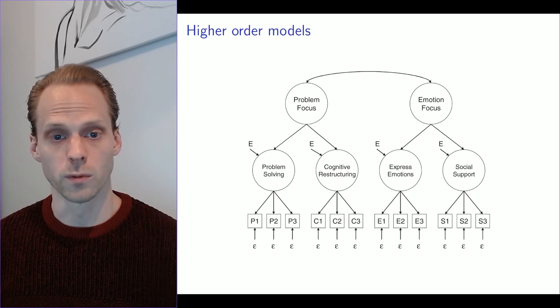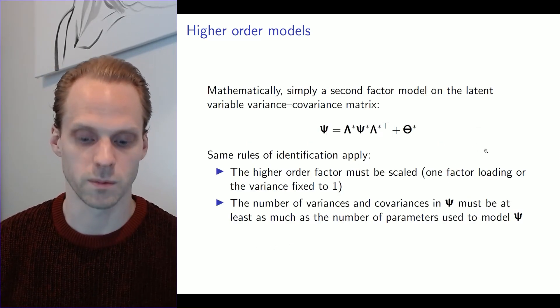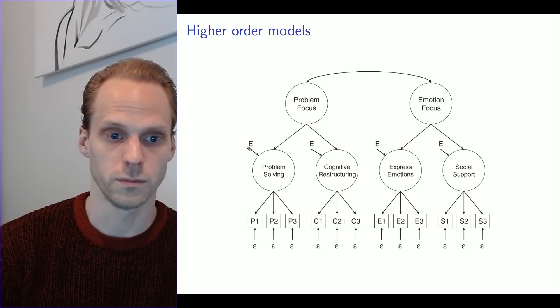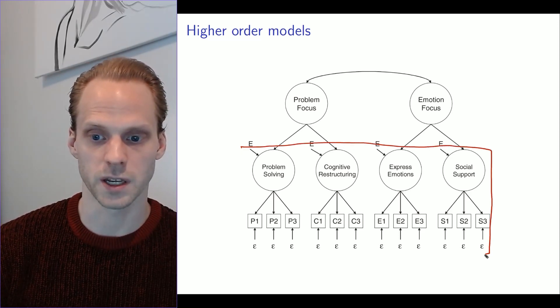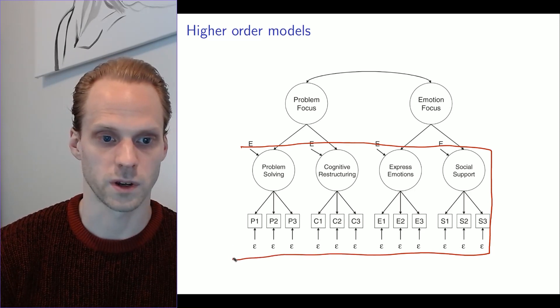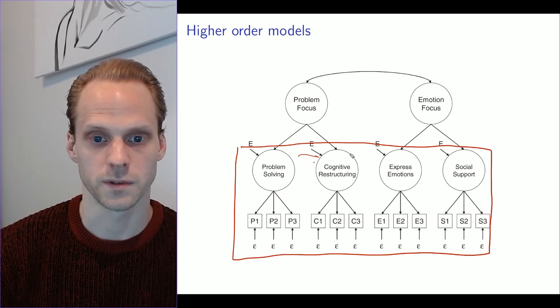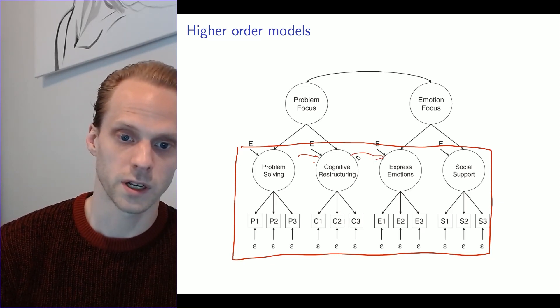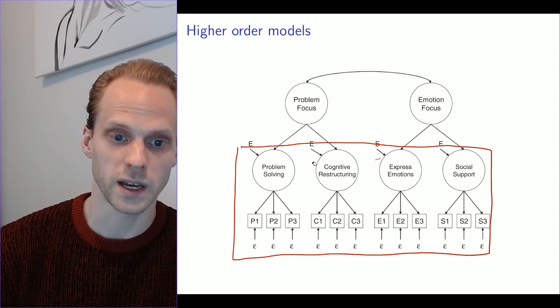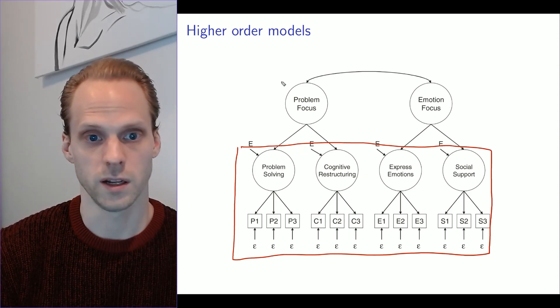A higher-order model is a model in which we have latent variables at higher levels than we had before. Until now, a CFA model has been a model where we have latent variables indicating a set of indicators. These were correlated with each other. Now, instead of doing that, what we're going to do is we're also going to explain the correlations at the latent level, again, with latent variables.